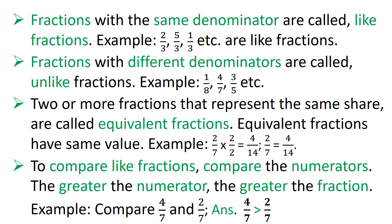Let us now see like and unlike fractions and equivalent fractions, and also how to compare like fractions. Fractions with the same denominator are called like fractions — example: 2 upon 3, 5 upon 3, etc. Fractions with different denominators are called unlike fractions — example: 1 upon 8, 4 upon 7, 3 upon 5, etc. Two or more fractions that represent the same share are called equivalent fractions. For example, 2 upon 7 — when I multiply the numerator and the denominator by 2, I get 4 upon 14. So one equivalent fraction of 2 upon 7 is 4 upon 14. Equivalent fractions will have the same value.